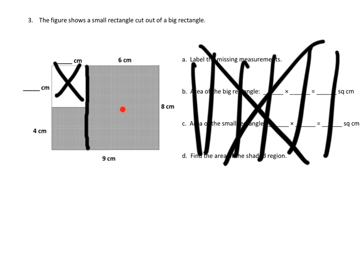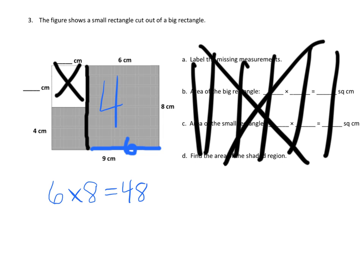Let's find the area of these two rectangles. Starting with the big rectangle: the side length isn't 9 — it's just this piece right here. The clue is up top — if this piece is 6, then this piece down here is also 6. The other side length is 8. So this big rectangle has side lengths of 6 and 8: 6 times 8 equals 48. This big rectangle has an area of 48 square centimeters.